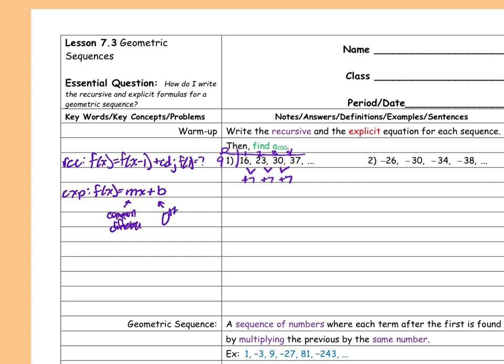f(x) = f(x−1). That part never changes — it's always the same. Then I just put in my common difference, in this case plus seven. And then I need my starting point, which is f(1). And f(1) equals 16. Done.